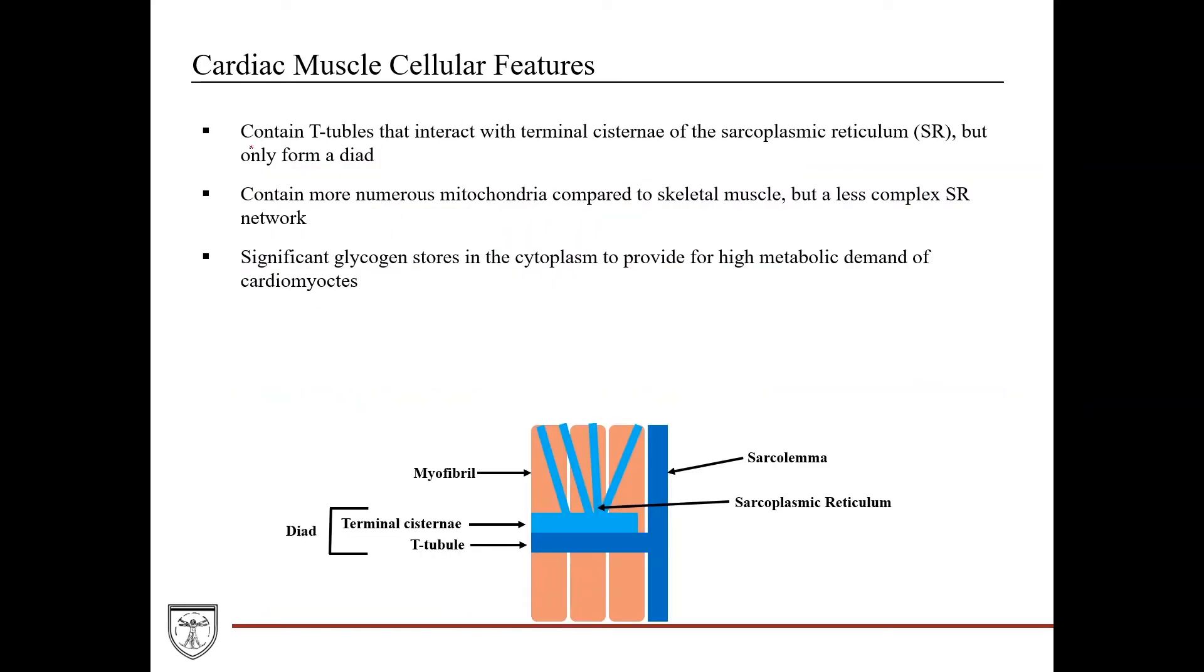Some cellular features. So they contain T-tubules just like skeletal muscle that interact with the terminal cisternae of the sarcoplasmic reticulum, but they only form a dyad. So you have the sarcolemma like this, you have the T-tubule coming down like this, and it only interacts with one terminal cisterna of the sarcoplasmic reticulum. So you form a dyad instead of a triad.